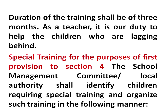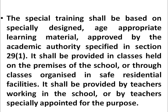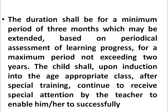For the purpose of the first provision of section 4, the school management committee and local authority shall identify children requiring special training and organise such training. The special training shall be based on specially designed age-appropriate learning material approved by the academic authority specified in section 29. It shall be provided in classes held on the premises of the school or through classes organised in safe residential facilities, by teachers working in the school or specially appointed teachers. The duration shall be a minimum of 3 months, extendable based on periodic assessment of learning progress, for a maximum period not exceeding 2 years.